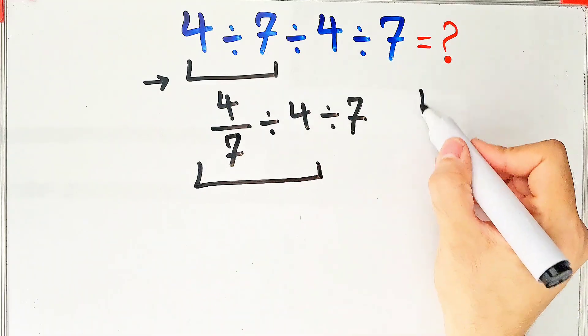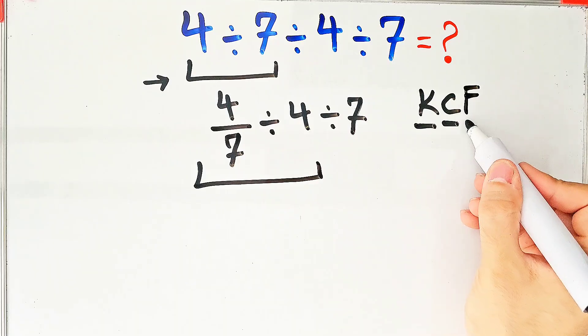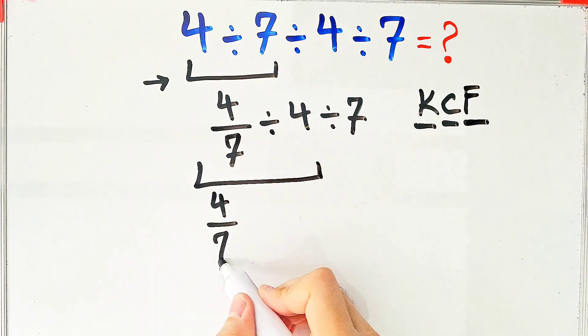To solve the first part, we need to follow the KCF rule. In this rule, K stands for keep, C stands for change, and F stands for flip.